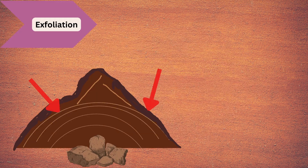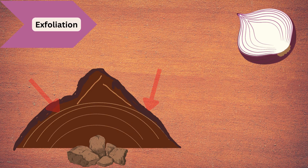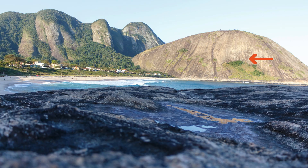Next is exfoliation. The layers of rock peel off due to the reduction in pressure as overlying materials are removed — like an onion peel. Look at the mountain image; you can see the exfoliation clearly.